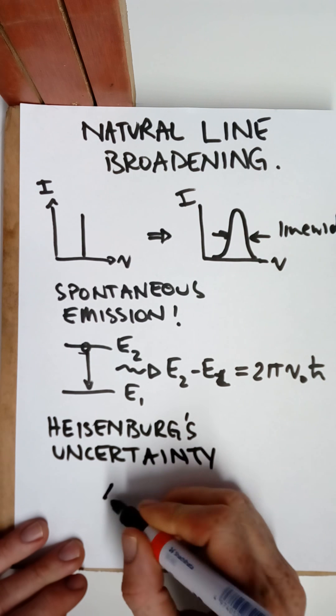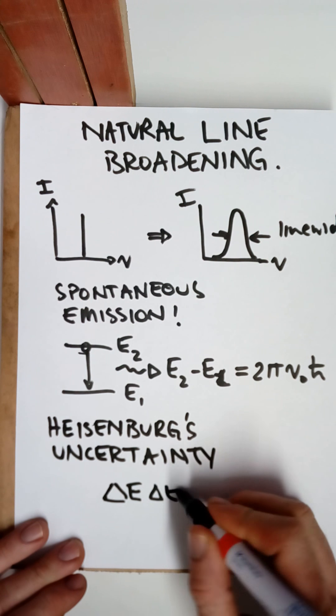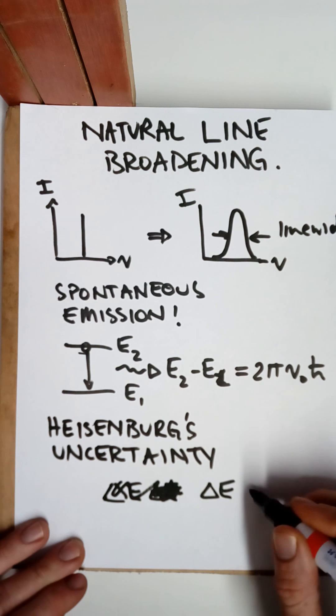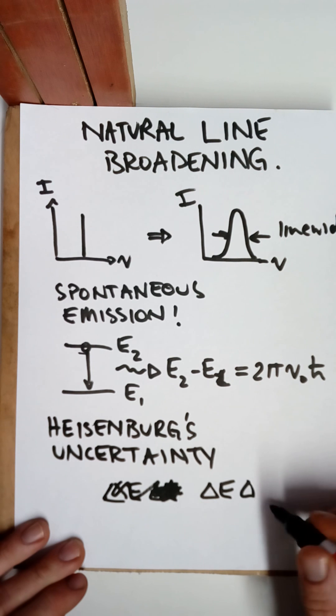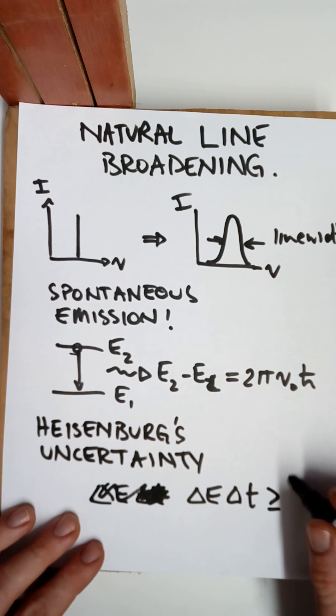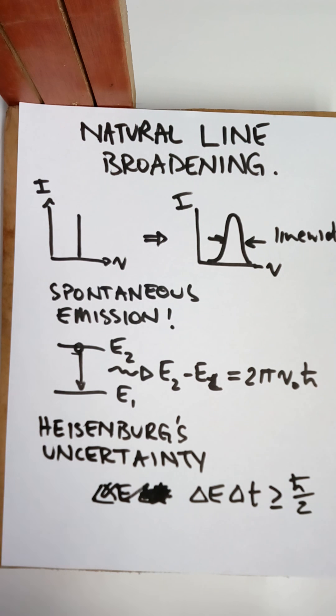So there's many forms of this, but one of them is that the uncertainty in energy multiplied by the uncertainty in time has to be greater or equal to this fundamental limit of Planck's constant divided by 2. Now, I'm not going to prove this. It's a well-known formula or principle in physics.